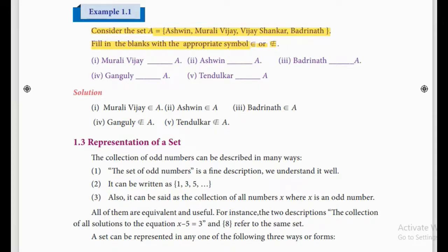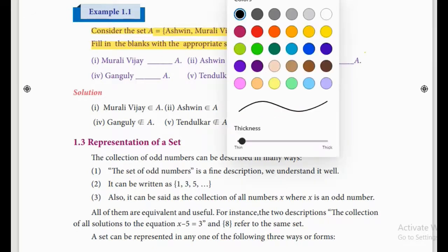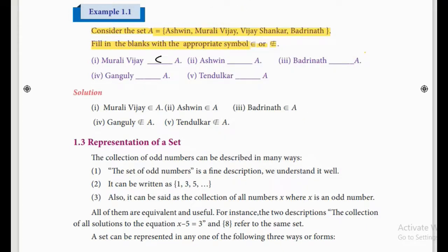First one: Murali Vijay — is Murali Vijay in set A? Yes. So we can say Murali Vijay belongs to set A. Ashwin — Ashwin is in set A, so Ashwin belongs to set A. Batrinath is also in set A, so Batrinath belongs to A. Ganguli — we have only 4 names and Ganguli is not there. So we can say Ganguli does not belong to A.